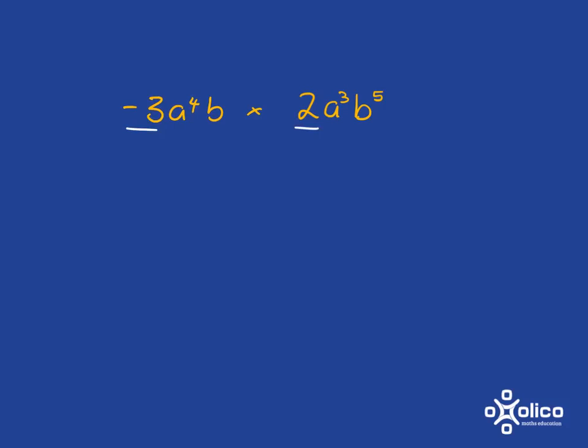Let's start with the coefficients and multiply them together. We've got negative 3 multiplied by 2. That gives us negative 6.